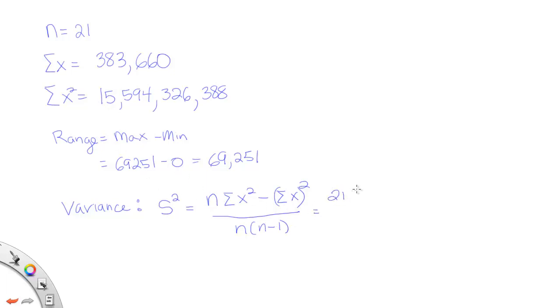So n is 21 times this number, the summation of x squared. It's a very large number. And the problem with the number this large is that, you know, if you look at it, it has essentially 11 digits. And sometimes calculators have trouble with calculations that have so many values.